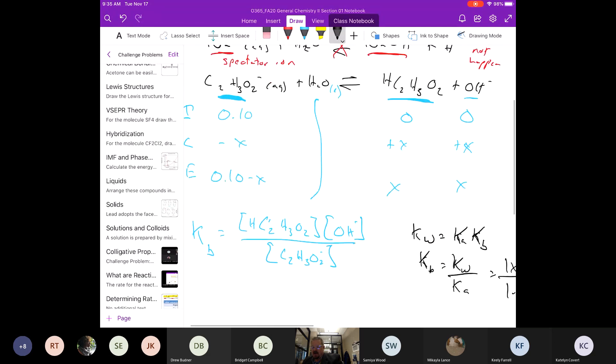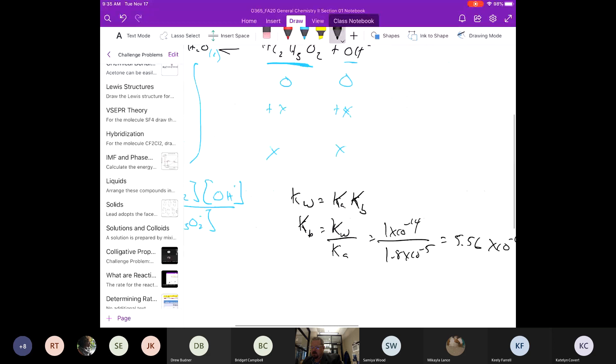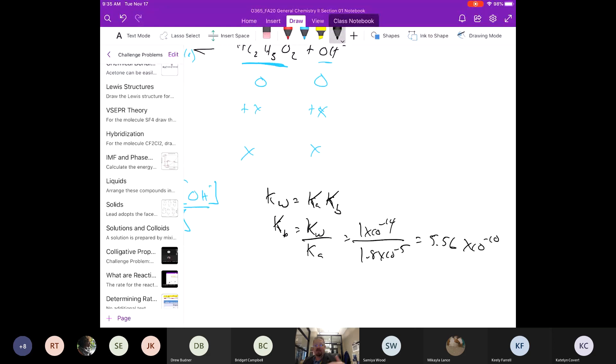But if we look at the acetate, now its KB is even smaller. So weak acid is going to give us a weak base. And we see that as we look at the conjugate, it's even a weaker base.